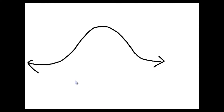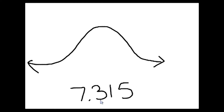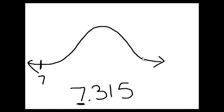In fifth grade, we're going to round a decimal like this: seven and 315 thousandths. If I want to round this to the nearest whole number or the nearest unit, that's going to be the seven. So I need to think about on my number line which two whole numbers seven and 315 thousandths is between. I know it's between seven on the low end, and the next whole number up is eight.